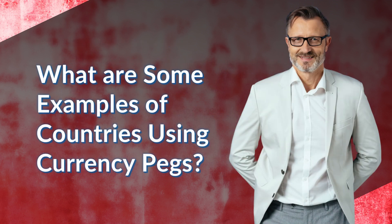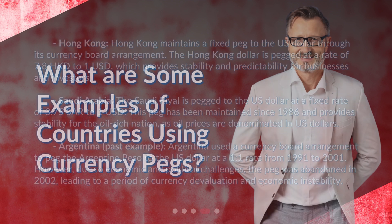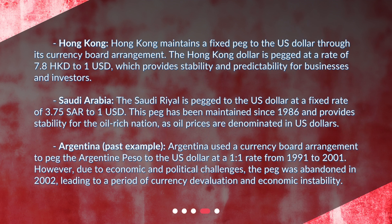Hong Kong maintains a fixed peg to the US dollar through its currency board arrangement. The Hong Kong dollar is pegged at a rate of 7.80 Hong Kong dollars to 1 United States dollar, which provides stability and predictability for businesses and investors.